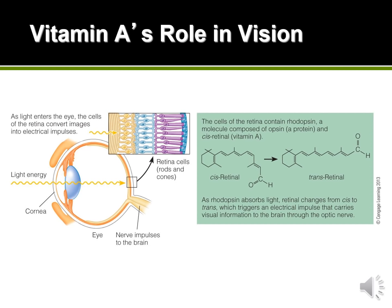If you have an issue with the vitamin A supply and it starts to affect the replenishing rate in your retina — you see something, the vitamin A drops off but you don't replace it quickly enough — what will happen is what we call night blindness. When you have a vitamin A deficiency affecting your retina you'll develop night blindness, where once it gets dark your eyes don't adjust as well, or at all.